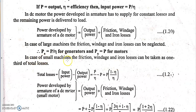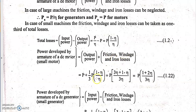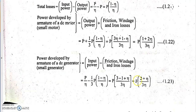For small capacity machines, friction, windage, and iron losses are taken as one-third of the total losses. Total losses equal input power minus output power, that is P/η − P = P(1−η)/η. One-third of this is the friction, windage, and iron losses. Combining these with the output power, we get expressions for PA for small machines.